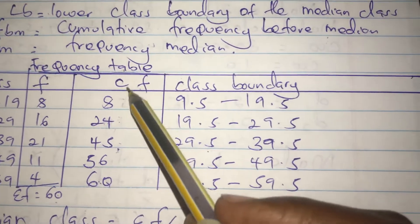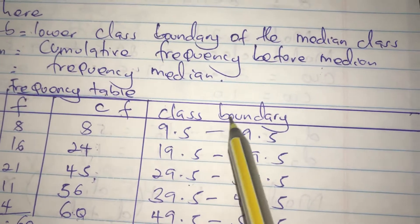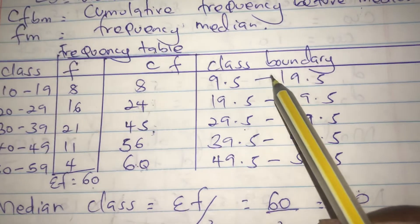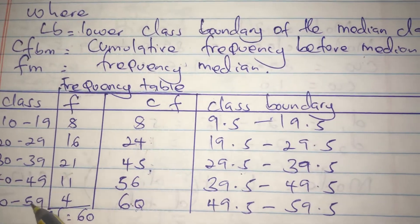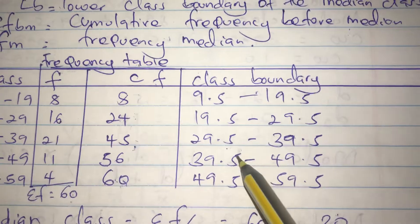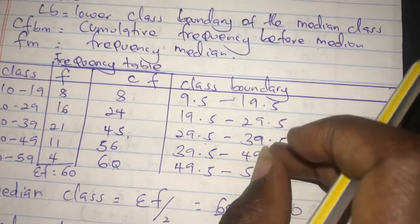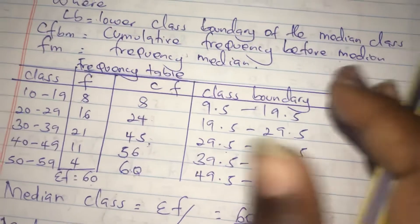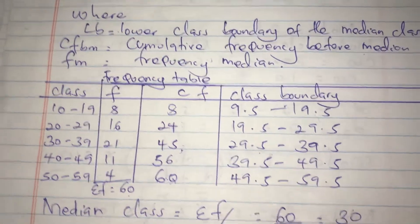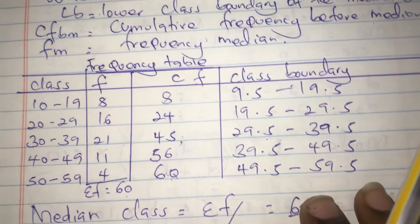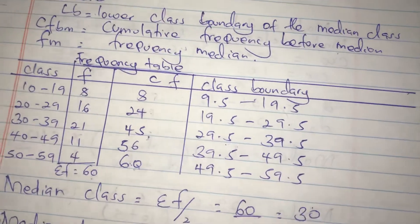We also include the class boundary column because we are dealing with an inclusive class. If the class is inclusive, we need to use the class boundary rather than the class limits when calculating. We saw how to obtain the class boundary in the previous videos.